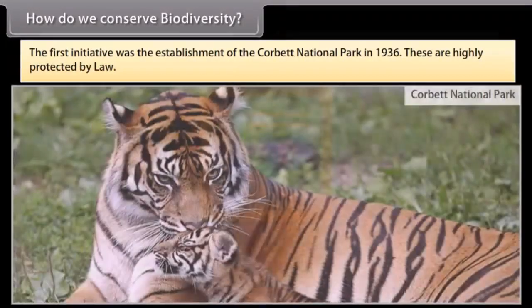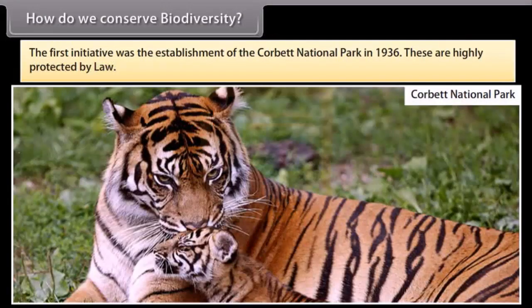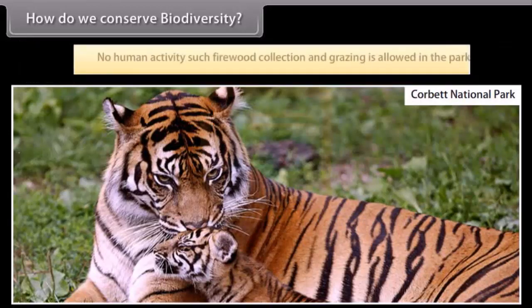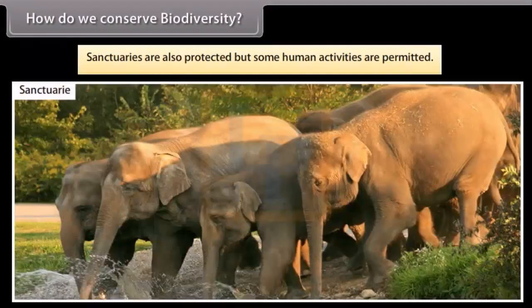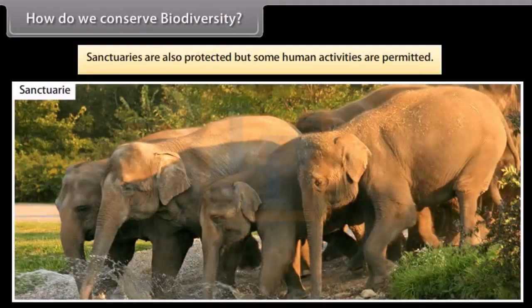The first initiative was the establishment of the Corbett National Park in 1936. These are highly protected by law. No human activity such as firewood collection and grazing is allowed in the park. Sanctuaries are also protected but some human activities are permitted.